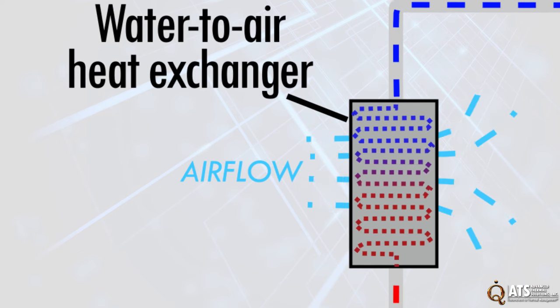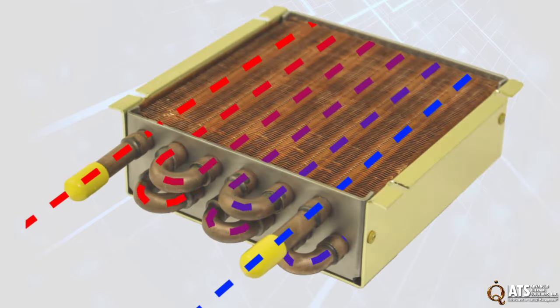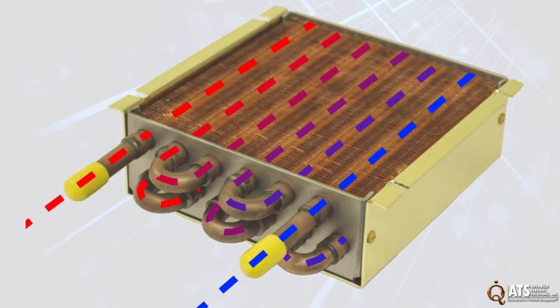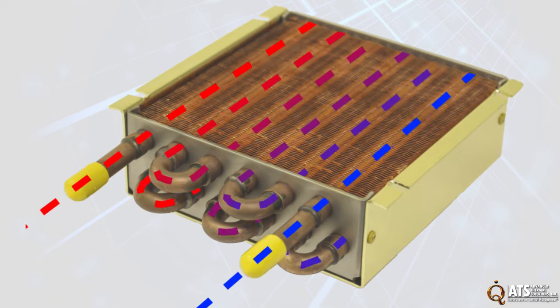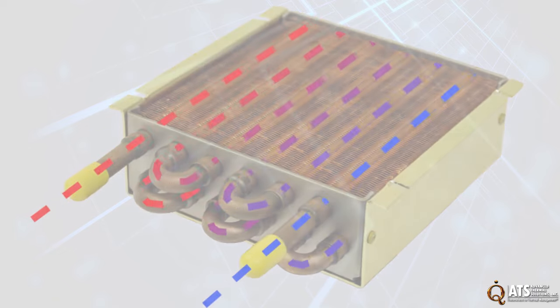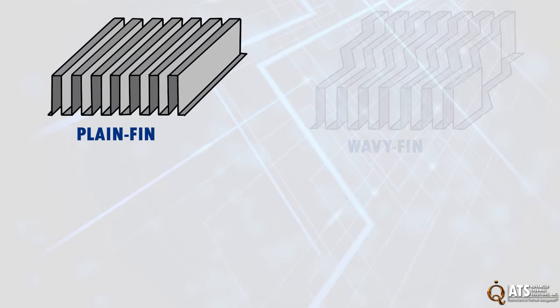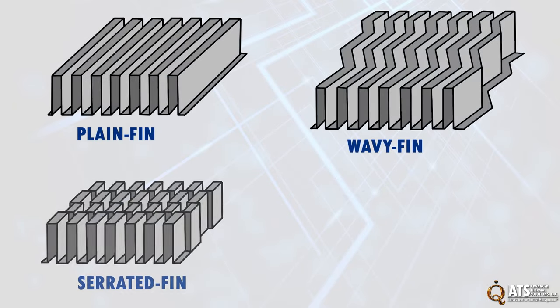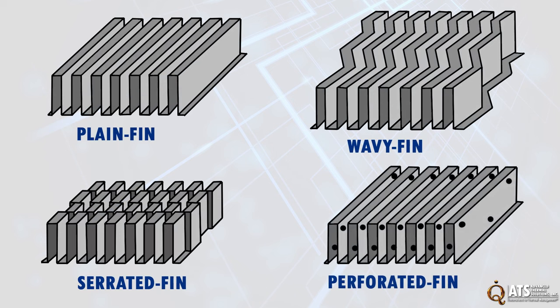For efficiency, heat exchangers are designed to maximize the surface area of the wall between the two fluids while minimizing resistance to fluid flow through the exchanger. Performance of the exchanger can also be affected by the addition of fins or corrugations in one or both directions, which increases surface area for enhanced thermal transport.